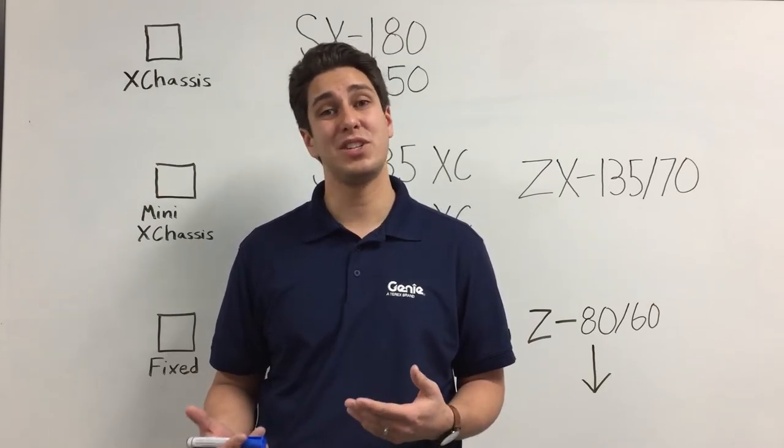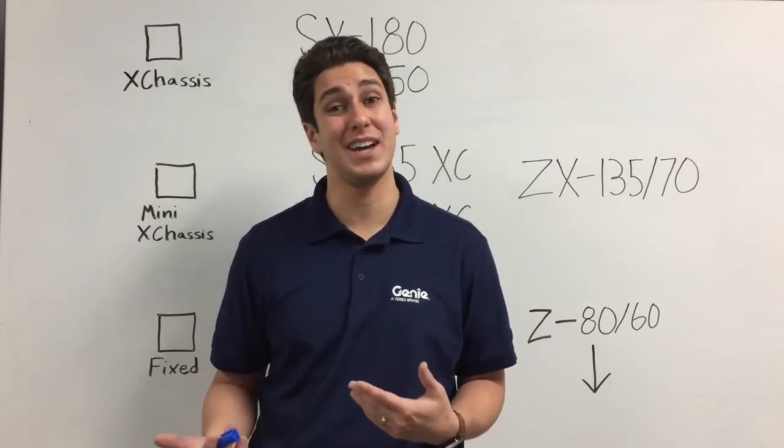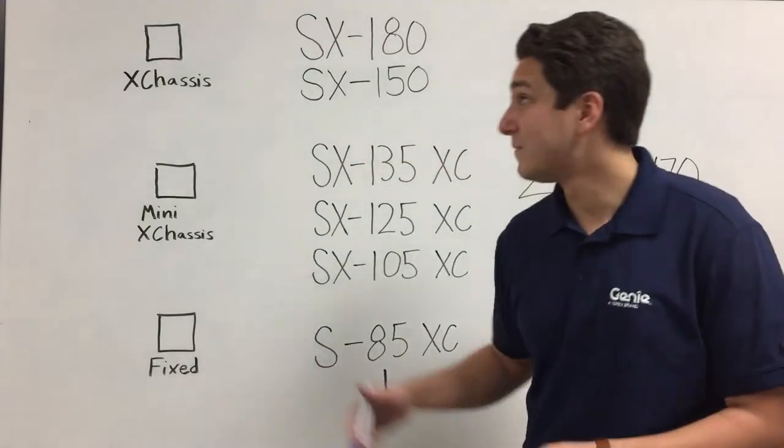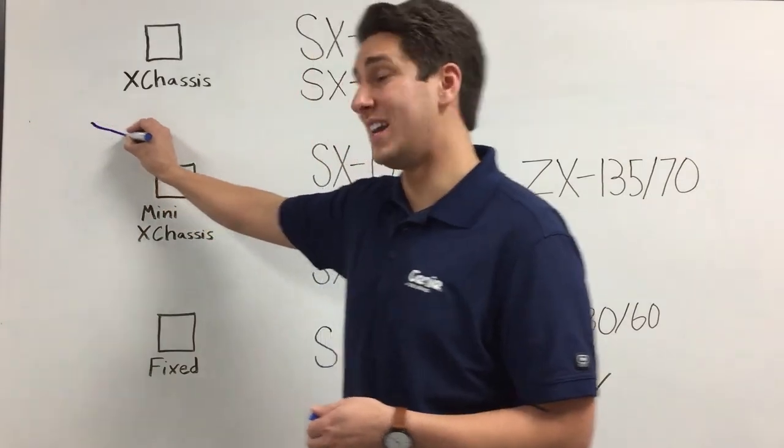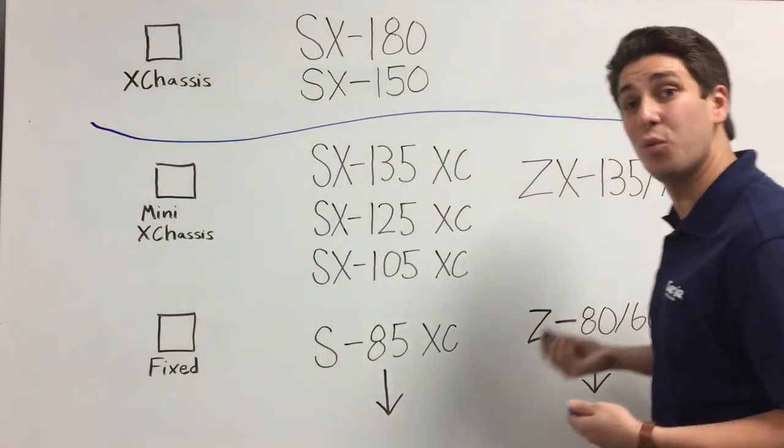We've done this by grouping our chassis into three categories or types. The first category is the full-size X chassis. This is the chassis found under the SX180 and the SX150.